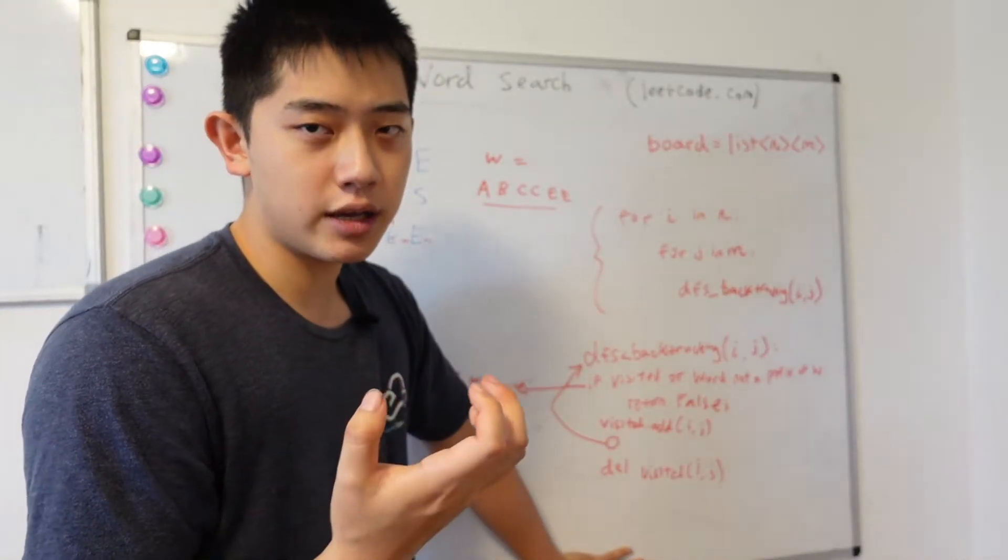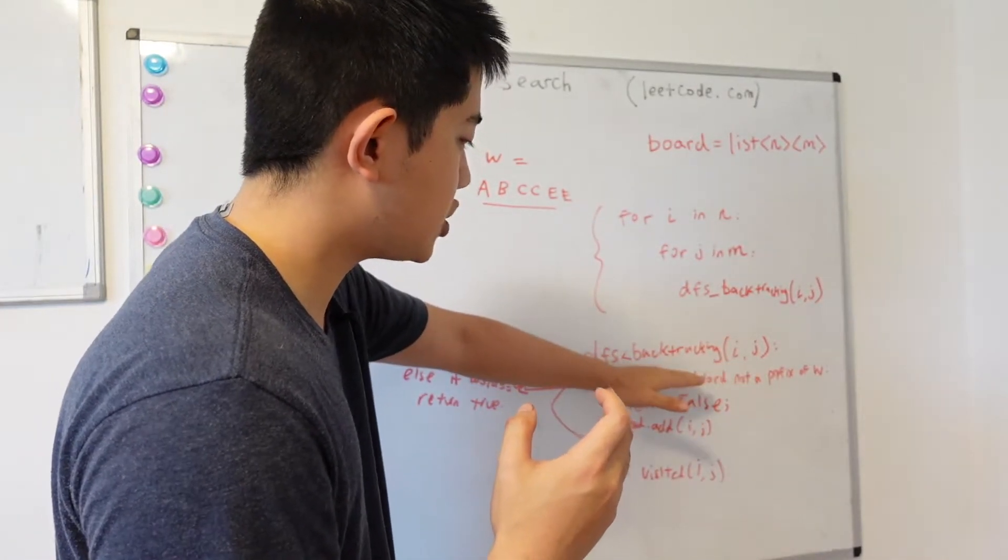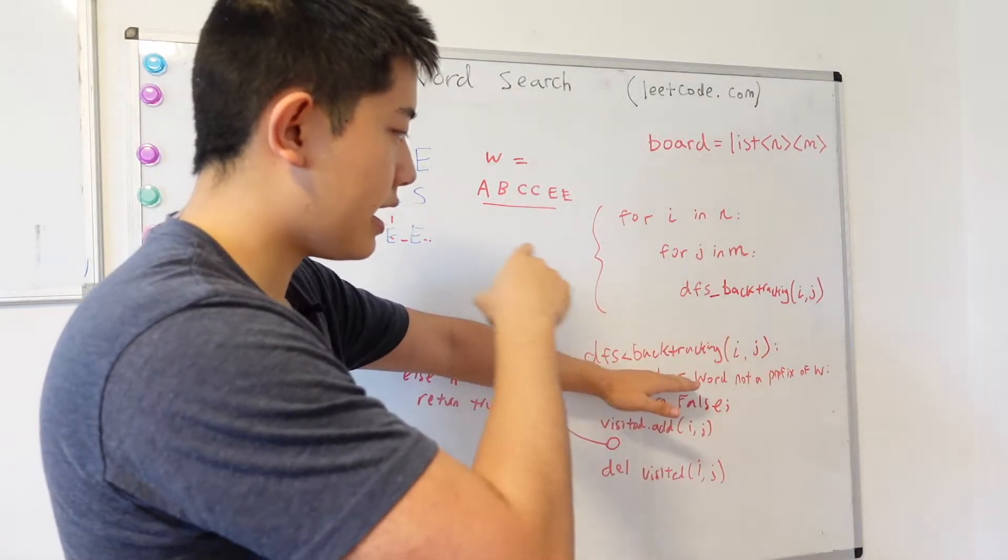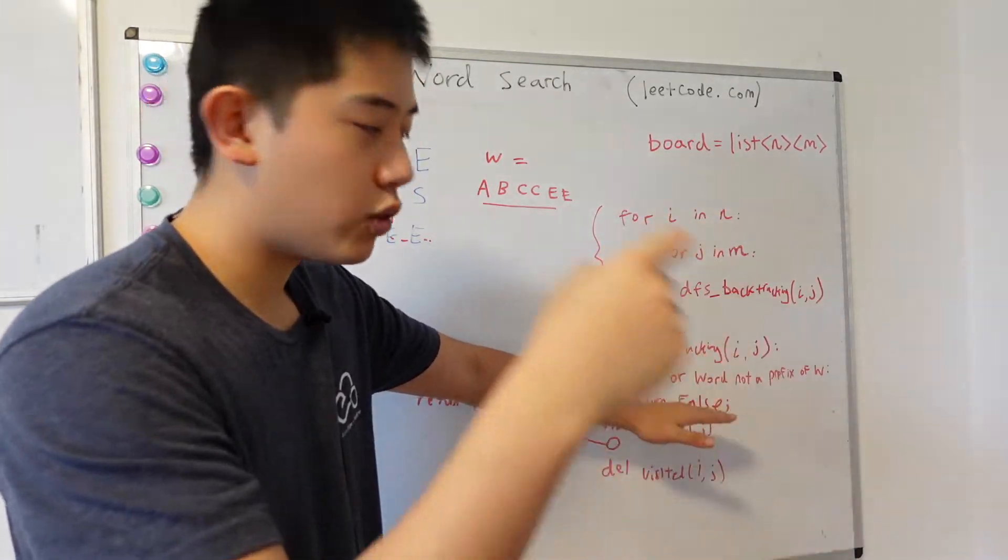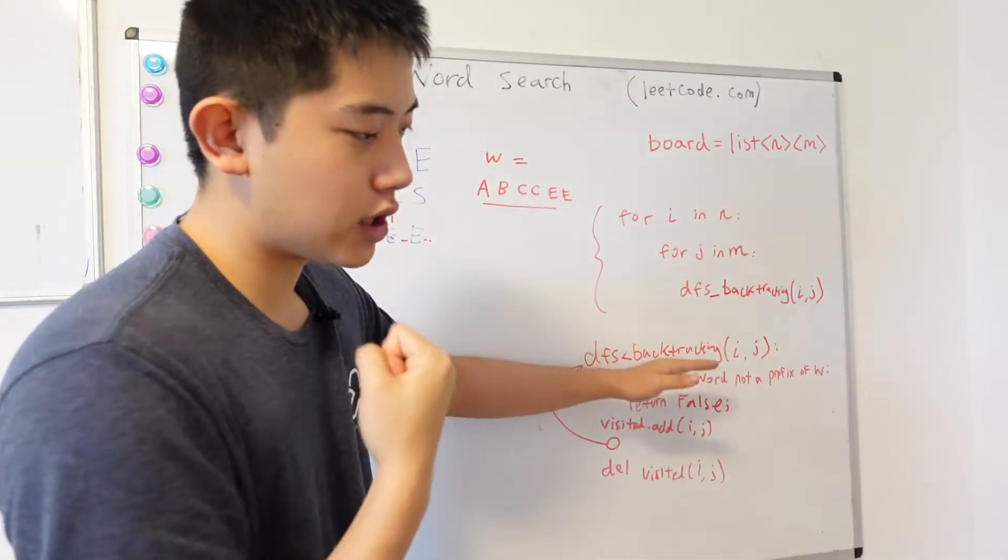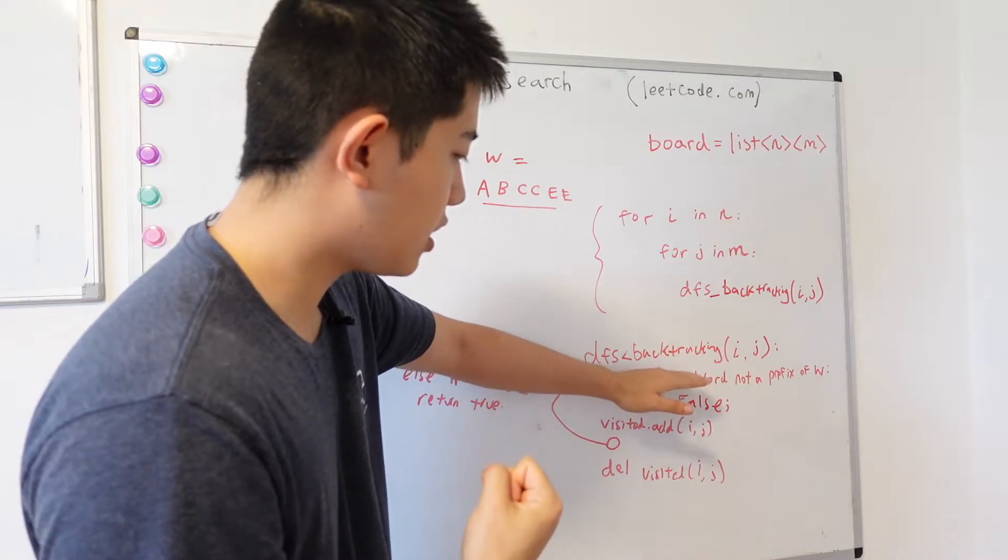And when you do backtracking in DFS, essentially what you do is you first commit to a specific node. And then if the commitment to the node or path doesn't satisfy what you're looking for, you backtrack or you go back to your previous step. And so you add to your visited set here.